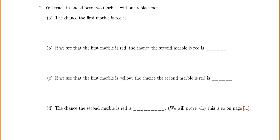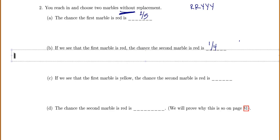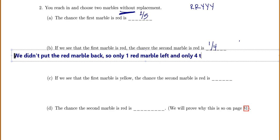For number two, we choose two marbles without replacement. We start with two red and three yellow. The chance that the first marble is red is two fifths. If we see that the first marble is red, the chance that the second marble is red is different: we didn't put the red marble back, so only one red marble is left out of a total of four, giving a probability of one fourth.